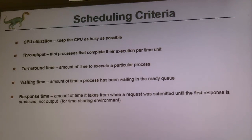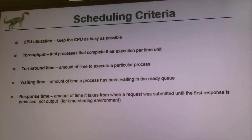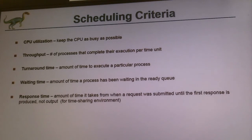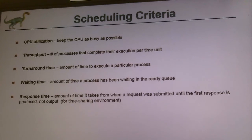Response time is another criterion. When you start running a process, the first time that process produces an output — whatever milliseconds pass between start and that first response — is your response time. We use turnaround time, throughput, CPU utilization, waiting time, and response time to make the right decisions to design our algorithms.